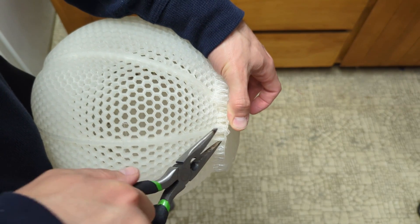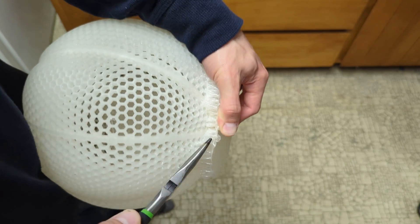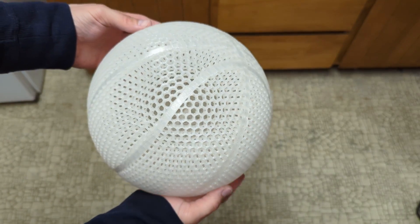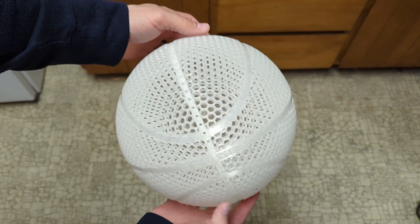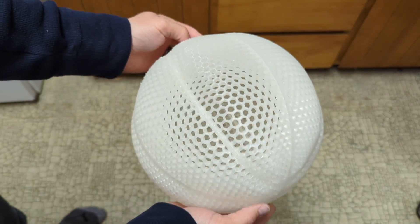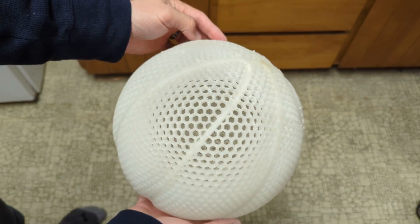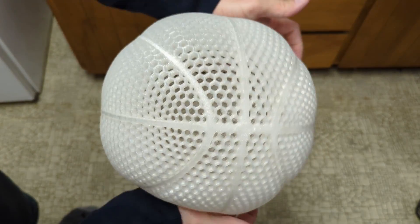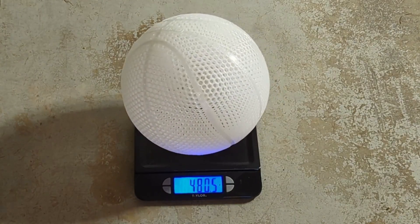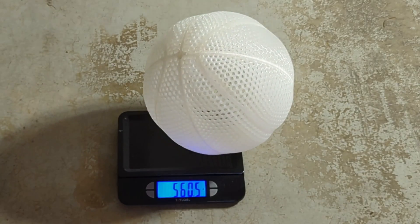Once the basketballs were printed I removed the supports. They're a bit of a pain to remove but they did come off eventually. This is the double lattice file when it's all cleaned up and this is the single lattice file after it was all cleaned up. Of course before any testing we have to weigh the basketballs. The double lattice ended up weighing about 480 grams and the single lattice weighed about 560 grams.